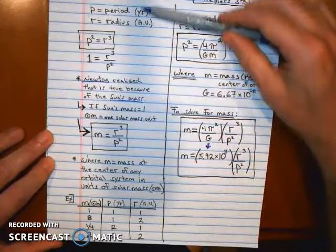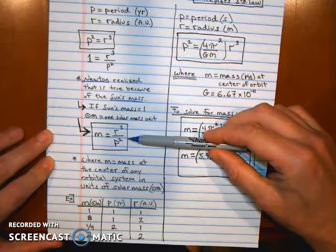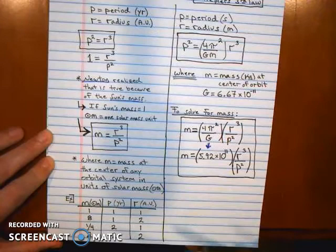And so all of Kepler's laws and Newton's refinement of Kepler's third law rely on units for period of years, radius of astronomical units, and solar mass units for mass.